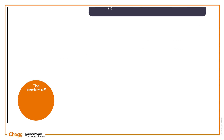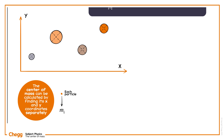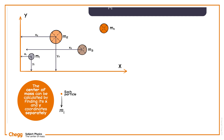The centre of mass can be calculated by finding its x and y coordinates separately. Consider a system of n particles with masses m1, m2, m3, through to mn, with position coordinates x1, y1, x2, y2, x3, y3, through to xn, yn respectively.